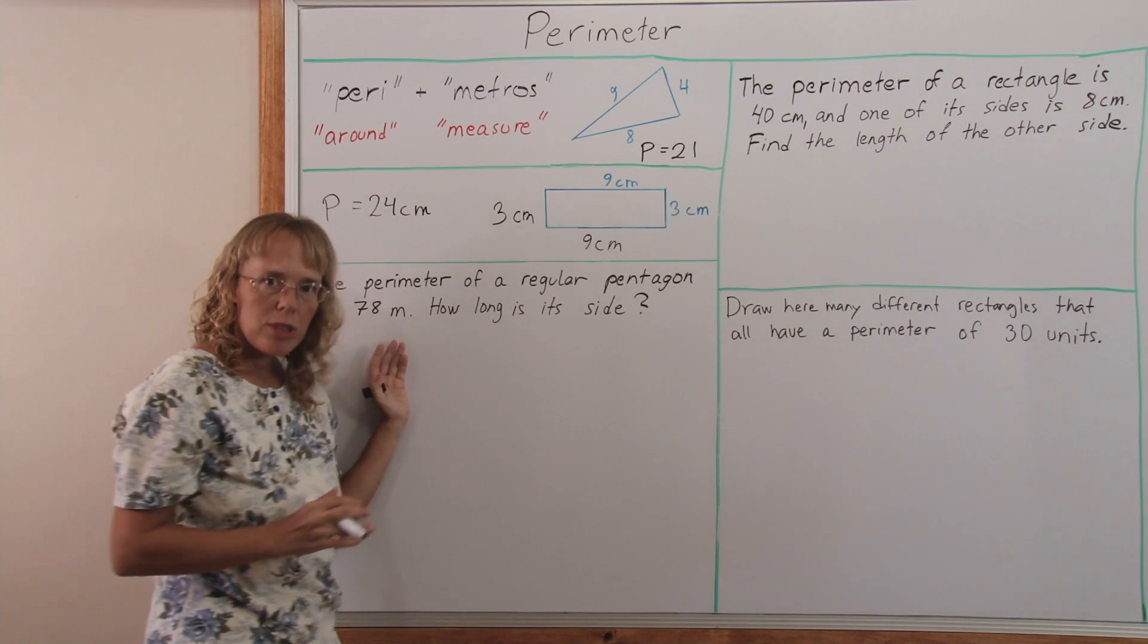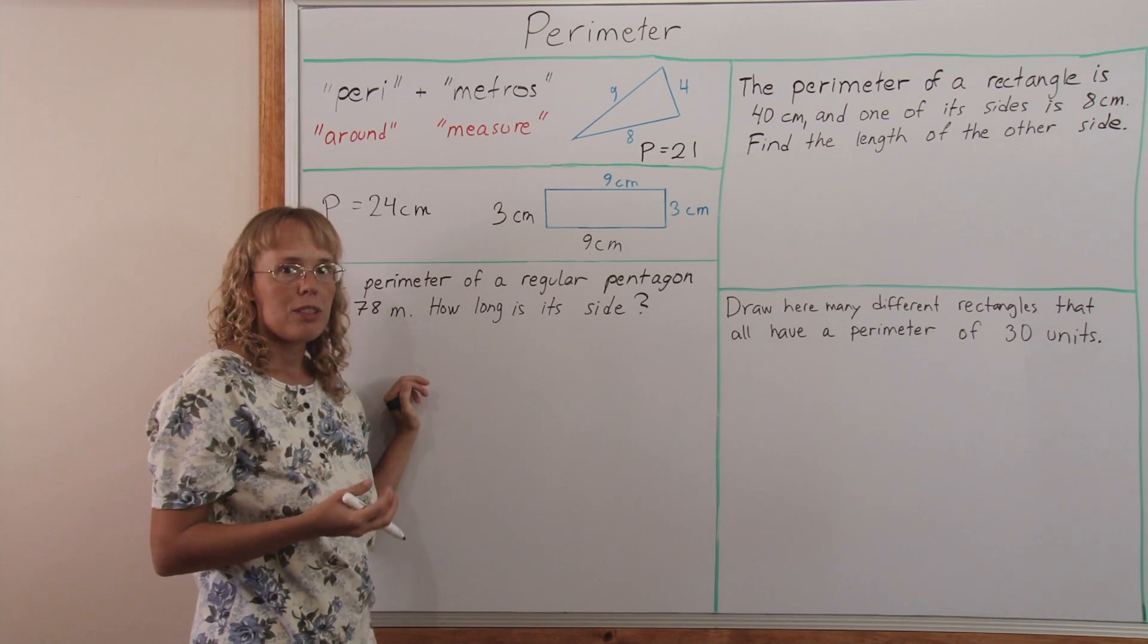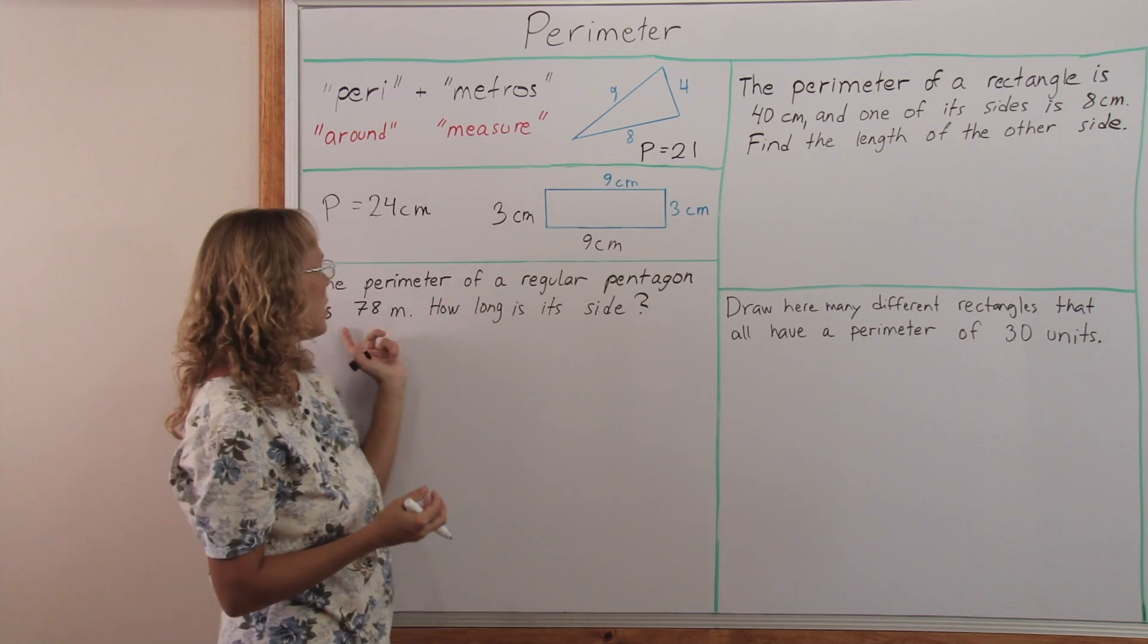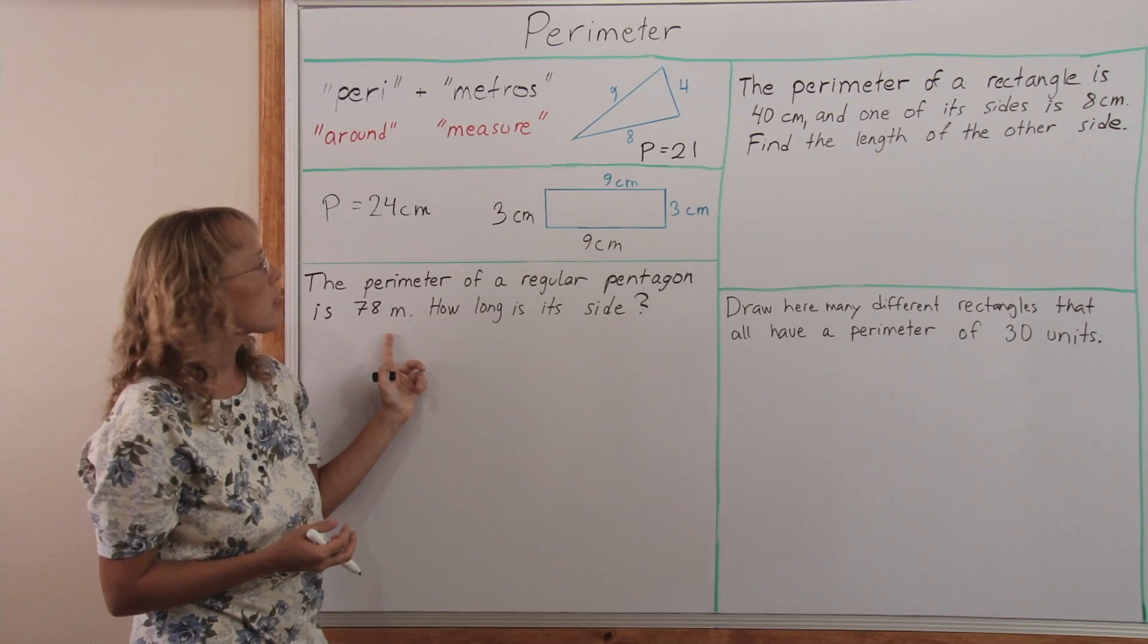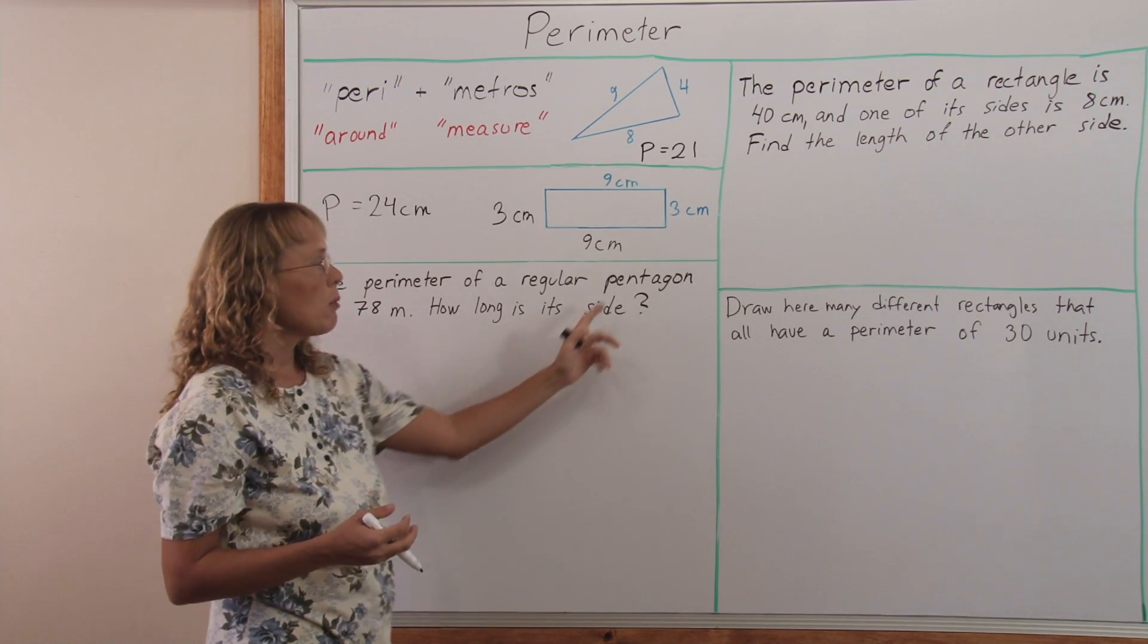Here is now the opposite type of problem. You are not asked the perimeter, it is giving you the perimeter. The perimeter of a regular pentagon is 78 meters and how long is its side? And we need to remember what's a pentagon.